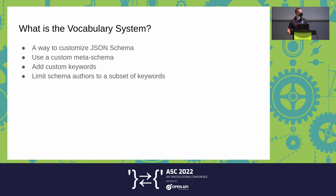So what is the vocabulary system? It's basically a way to customize JSON Schema. We can add keywords, we can limit the features of keywords, or create whole new subsets based on vocabularies that already exist.